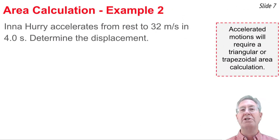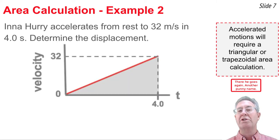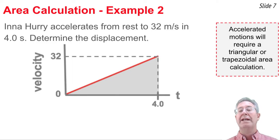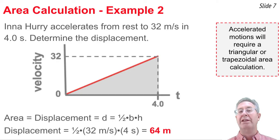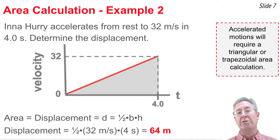Second example: a car accelerates from rest to 32 meters per second in 4 seconds — determine the displacement. Plotting the motion gives a diagonal line from 0 m/s at time 0 to 32 m/s at 4 seconds. The area is triangular, so we use one-half times base times height: one-half times 4 times 32, which gives 64 meters. That's the displacement of the object.